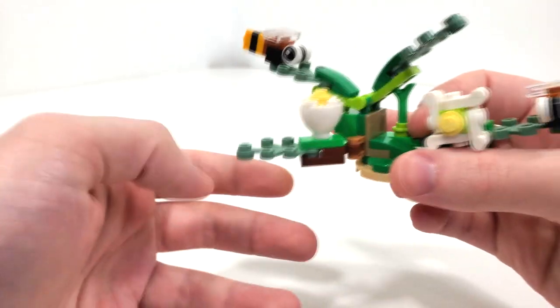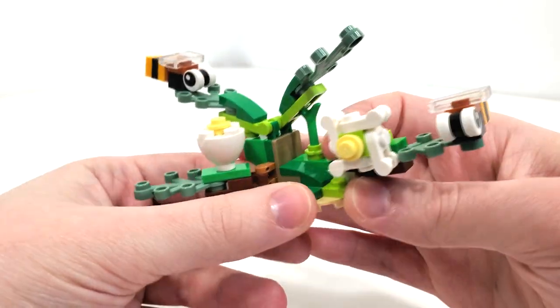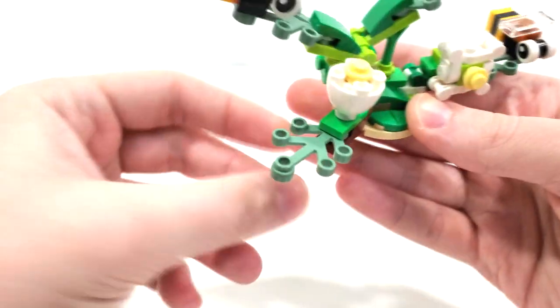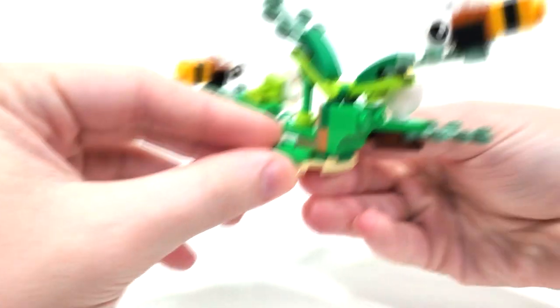We also get the printed eyes, the 1x1s, from both sides. Simple, easy design with lots of different green pieces. I have to appreciate getting these leafy pieces in the sand green for this particular build.